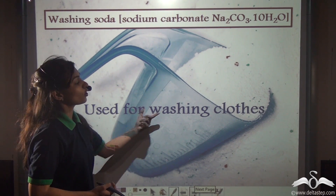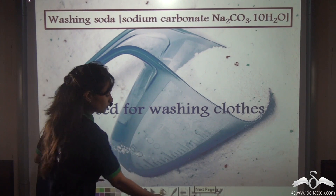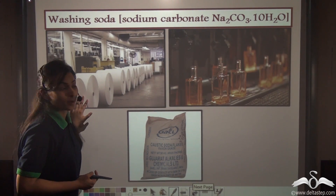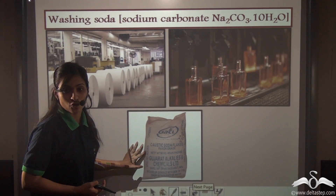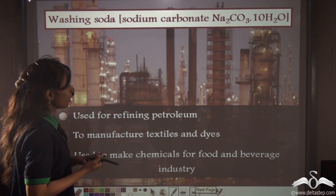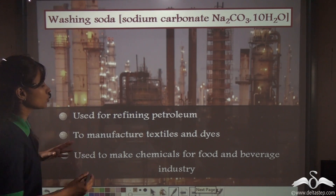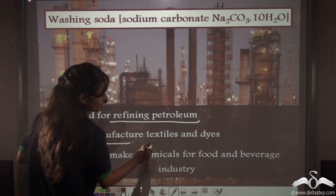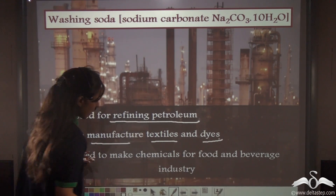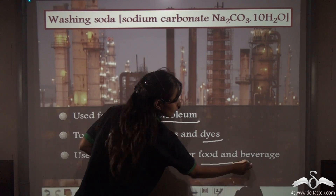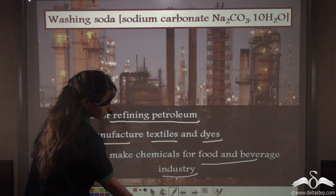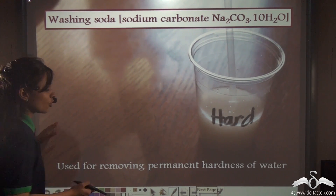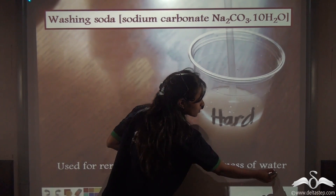As the name suggests, washing soda is used for washing clothes. It is also used in the manufacture of paper, glass and plastic soda. Washing soda is also used for refining petroleum, it is used to manufacture textiles and dyes, and it is used to make chemicals for the food and beverage industry. Washing soda is also used for removing permanent hardness of water.